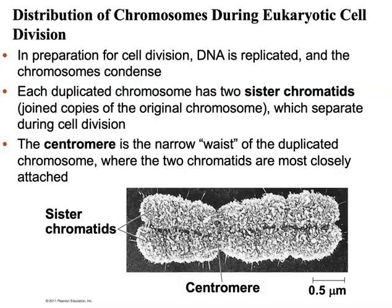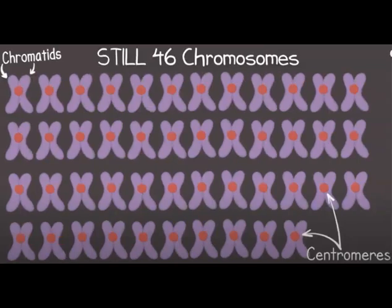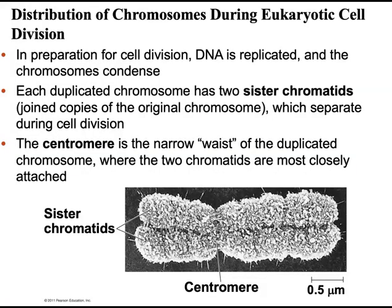To prepare for cell division, DNA is first replicated — a process we will learn in chapter 16 — and the individual chromosomes condense. Using a muscle cell as an example: it begins with 46 chromatids. DNA replication doubles that number to 92 chromatids. The two copies of identical DNA remain tethered together, attached by a centromere. A centromere is a narrow waist of the duplicated chromosome where the two chromatids are most closely attached. The two completely identical molecules are called sister chromatids, and together the two sister chromatids attached at the center by the centromere make up a chromosome.